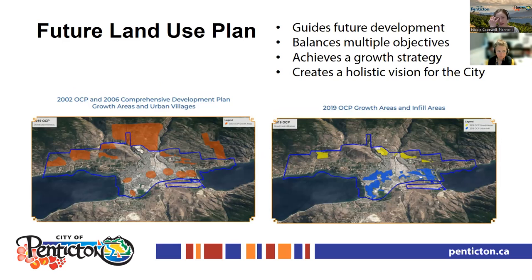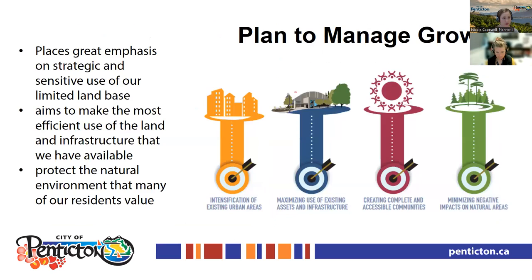The Official Community Plan outlines areas where the city expects growth to occur. In our 2002 OCP, many hillside areas were expected to be developed. In our 2019 OCP, some of those growth areas have been scaled back and more infill areas are proposed to accommodate growth, rather than pushing up into hillsides such as the Upper Wiltsy lands and Spiller Road areas. The four yellow areas shown on the map represent hillside development zones, while the rest is proposed to be accommodated within the urban core.